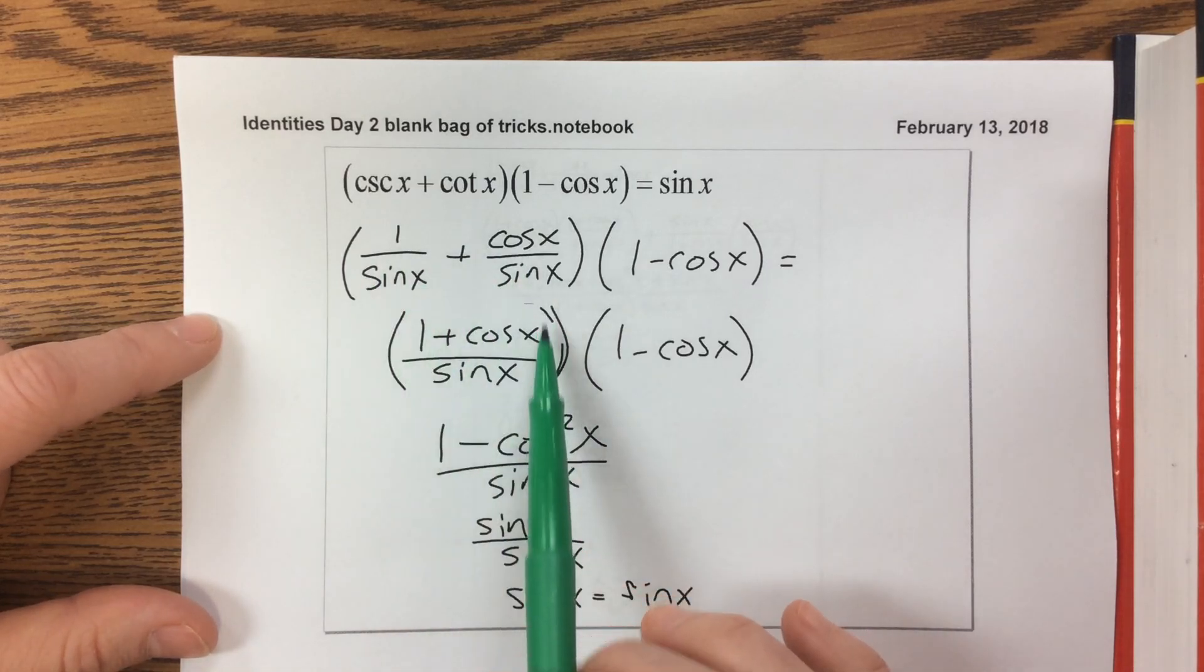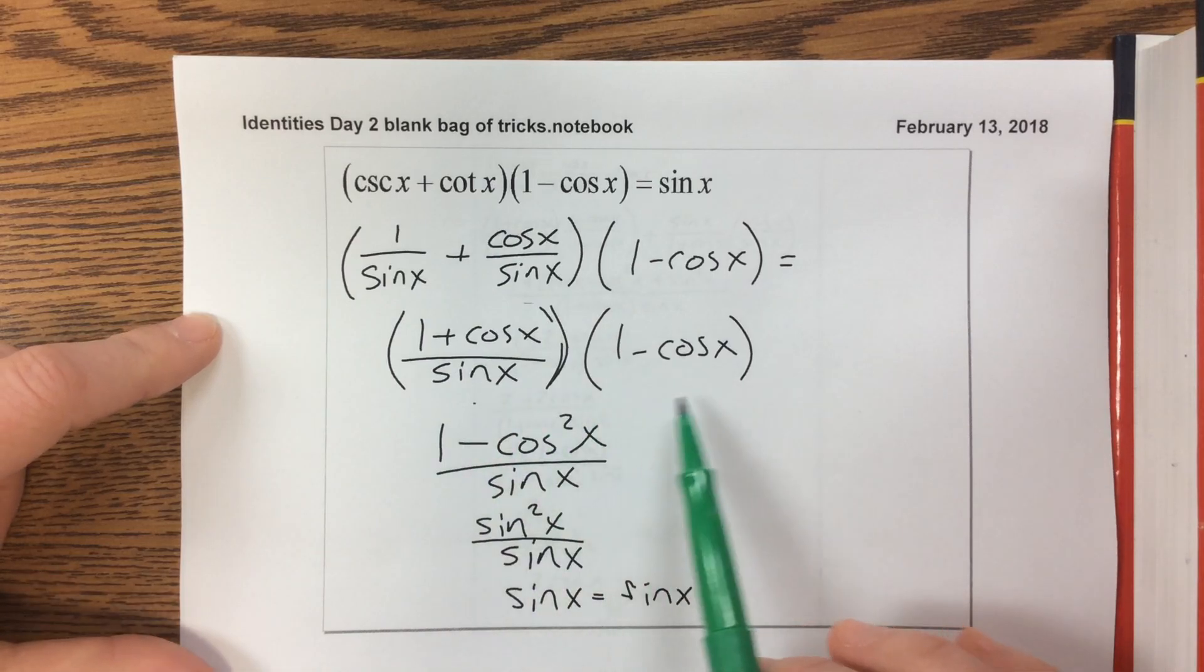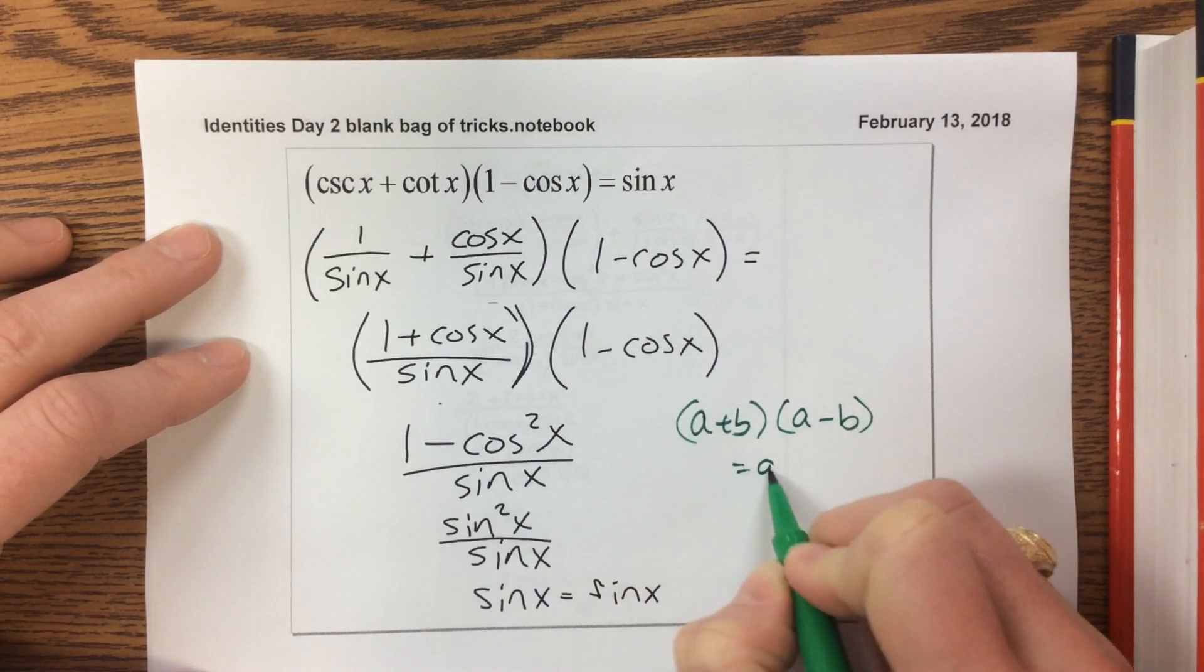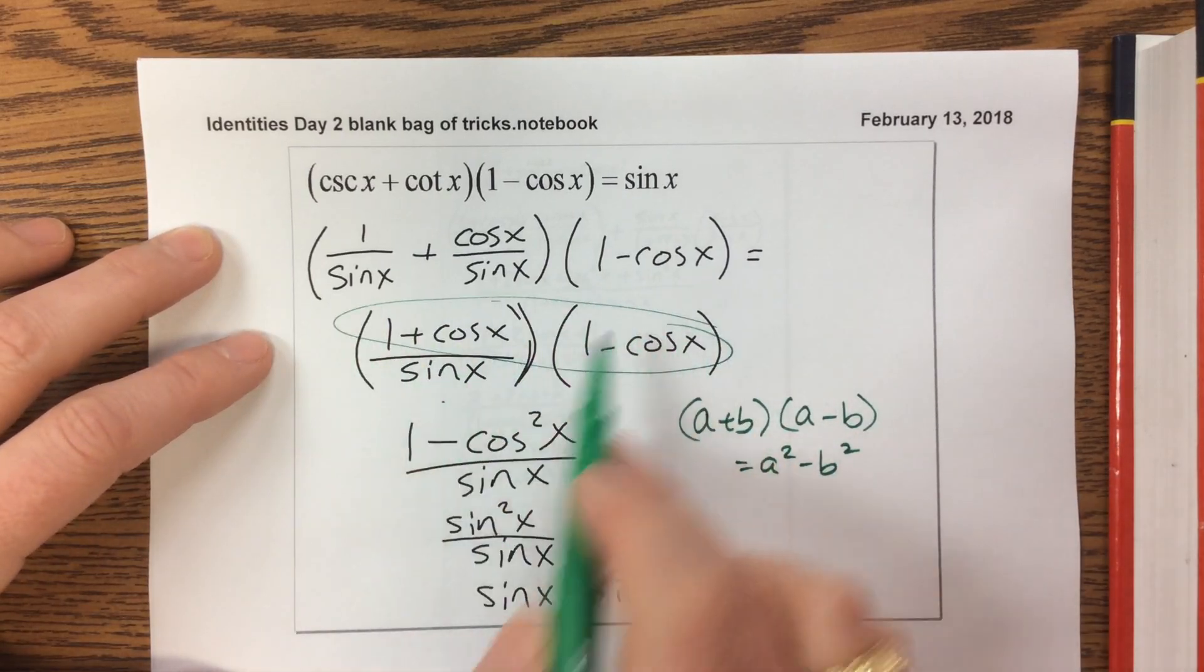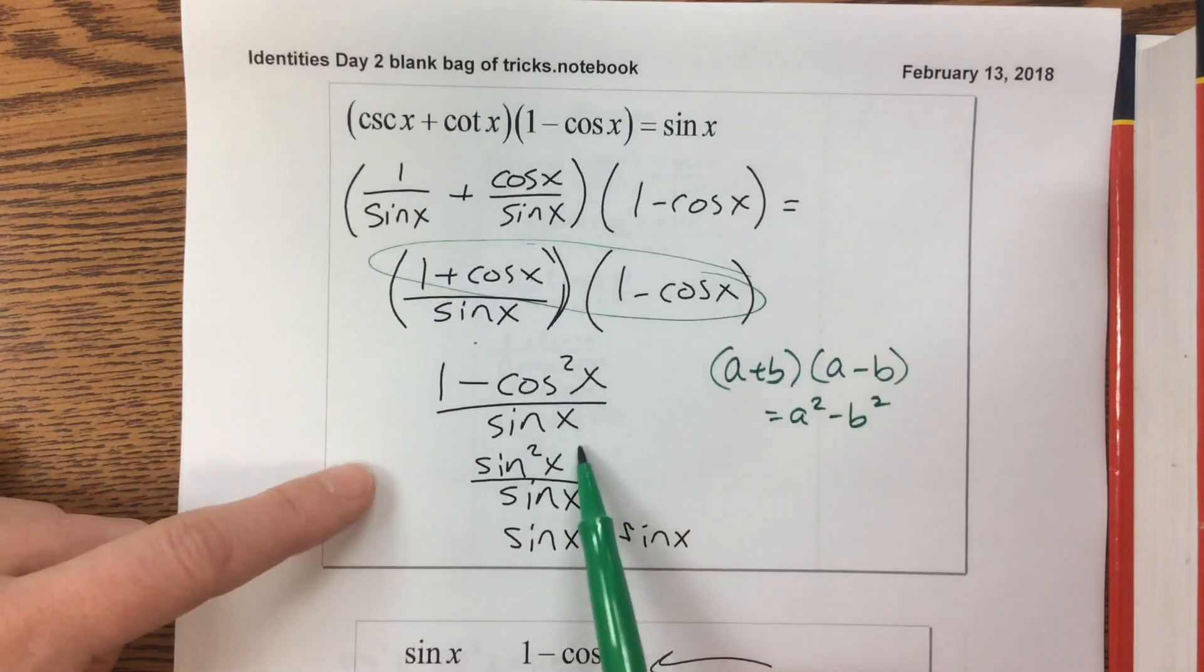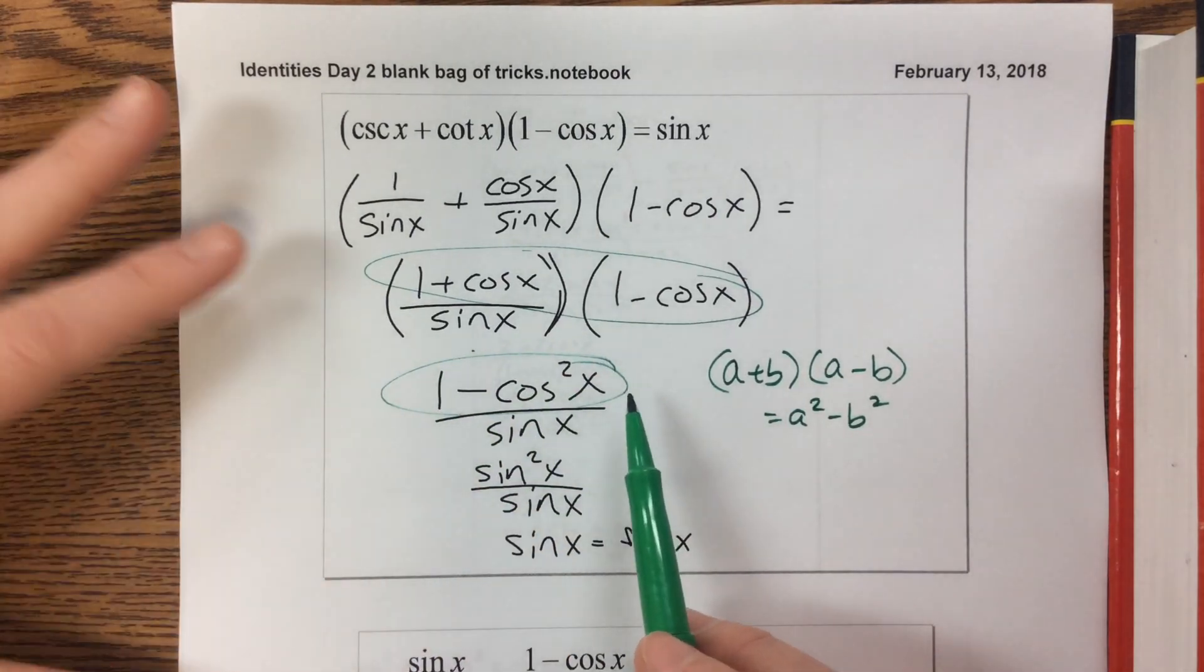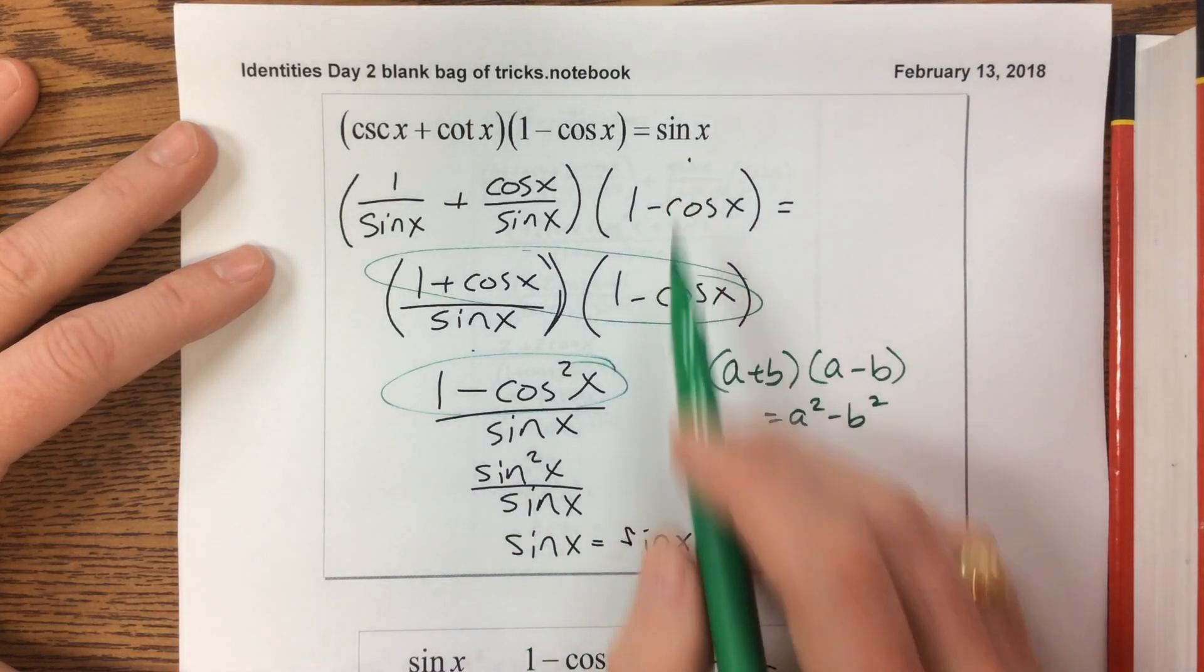So then we got to 1 plus cosine over sine. And then I recognized that this is a plus b in the numerator times a minus b, which equals a squared minus b squared. So this up at the top right here, when that multiplied, that worked out really nicely. It gave us 1 minus cosine squared x over sine of x. This, hopefully you will recognize very soon that that's part of the Big Daddy. That gives us sine squared x over sine, which is just sine, and that equaled what we needed.